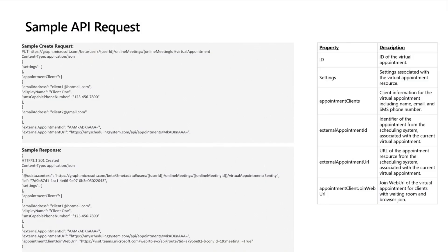Let me jump into what a sample API request might look like. This API is built on top of the online meeting API. We're initially supporting delegated permissions, and once you pass the online meeting ID, we create a new virtual appointment resource. Inside this resource, we store a bunch of new properties. You can store the client — the end consumer in the B2C scenario, like the patient in the telehealth scenario — including their name, email, and phone number. We also have properties to store the external appointment ID and the URL of that external scheduling system.